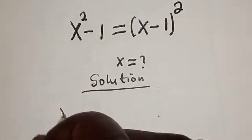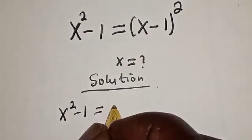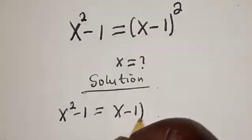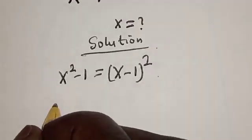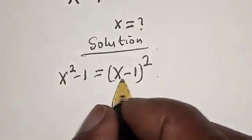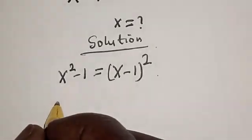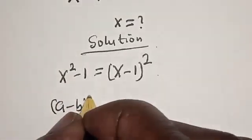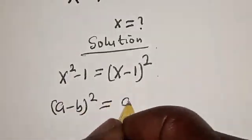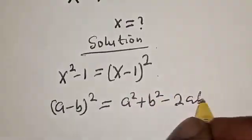We have x square minus 1 is equal to x minus 1 all square. So the left hand side is x square minus 1. And let's work with the right hand side. Remember this rule: a minus b square is equal to a square plus b square minus 2ab.